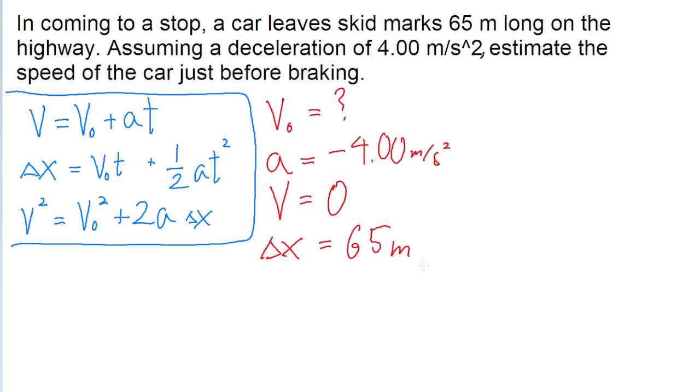Now that we've made note of all these variables, we just need to pick out the equation that will help us find V0. We need the equation that has all four of these variables, which we can see is the third equation: V squared equals V0 squared plus 2a delta x.